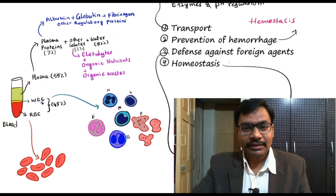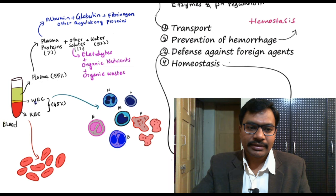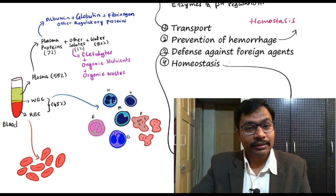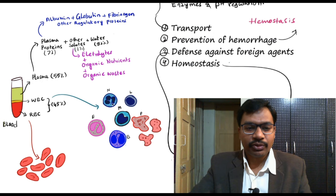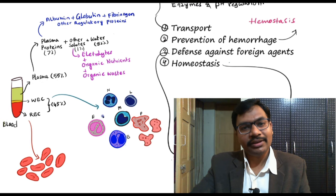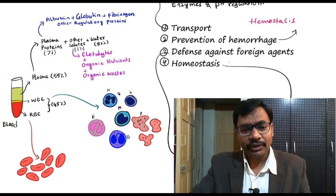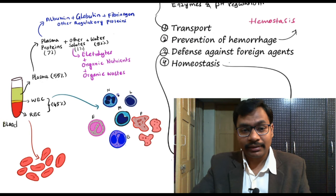Coming to WBCs, these cells are present in very low quantity in the blood. White blood cells means they do not have any particular color. However, these cells can be seen in different colors when stained with different stains under a microscope. We have neutrophils, lymphocytes, monocytes, basophils, eosinophils, and platelets. These are the WBCs — they do not have any color in real situations.